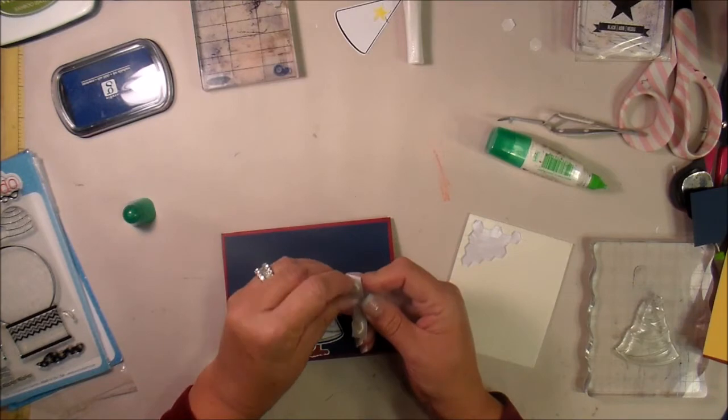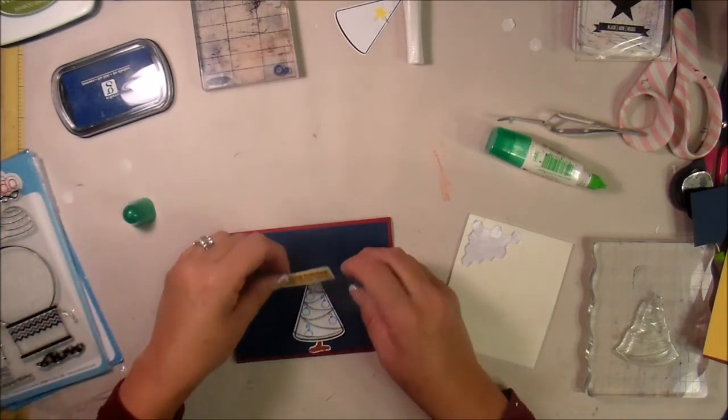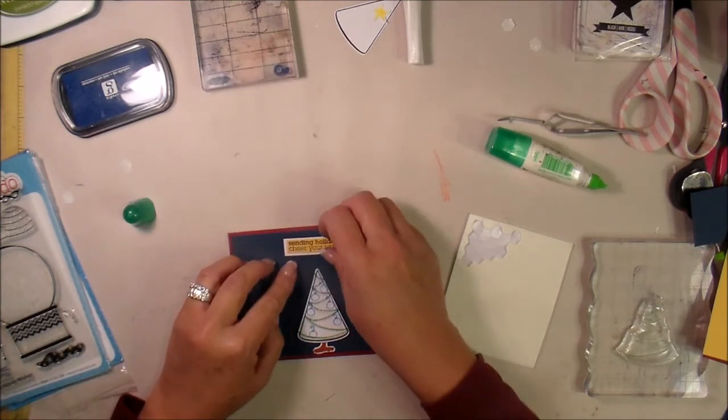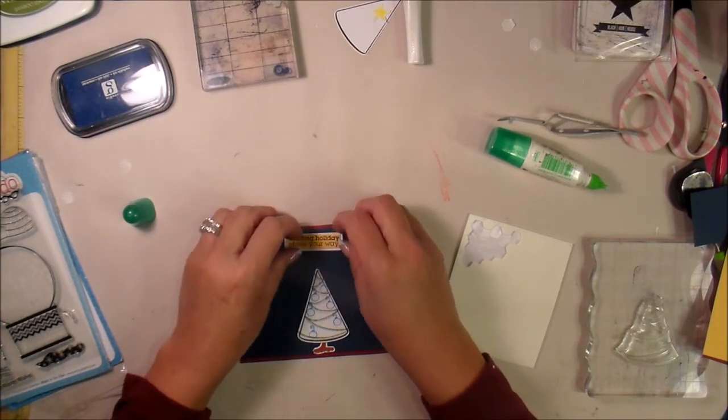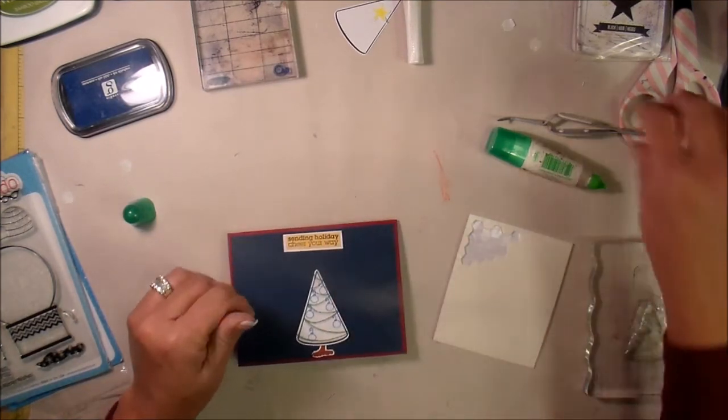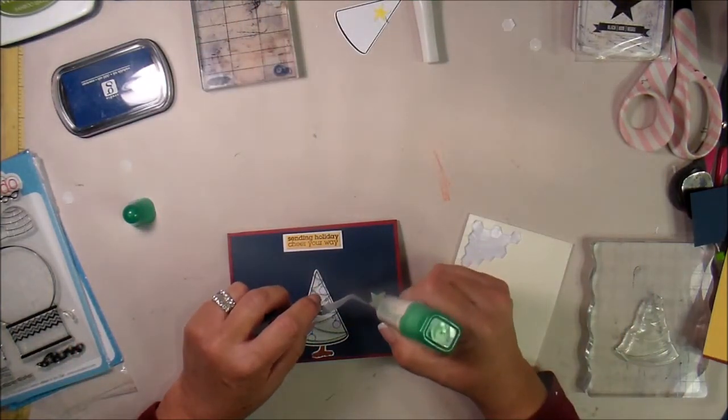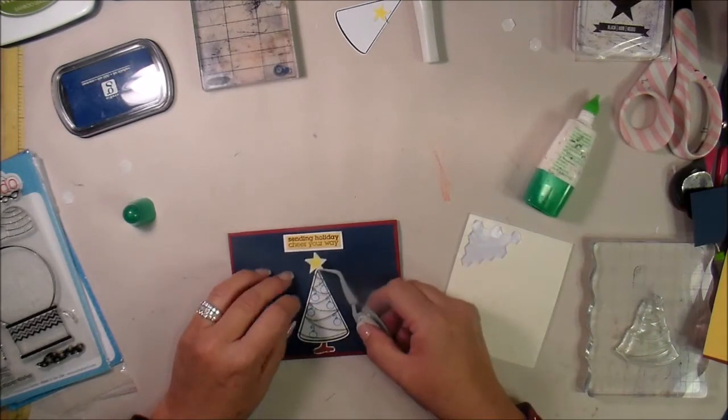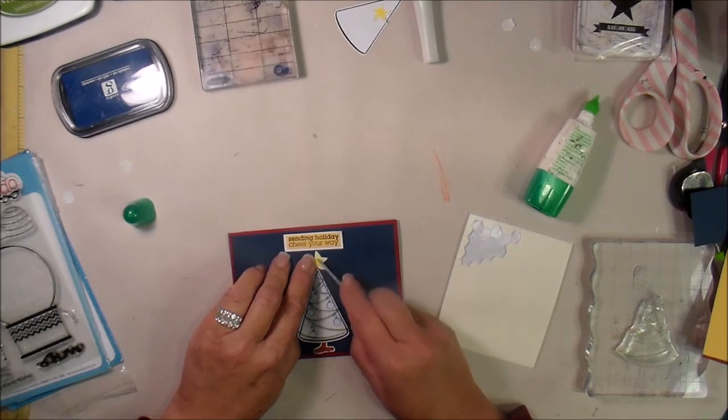I did a white back and a yellow front just to give it a little bit more color to it. Try to get that positioned. I'm going to put that up just a little bit more because I still have the star to put on. All right. Let's grab the star. I fussy cut the star as well. I'm saying that now just because I had mentioned that I got the Brother Scan and Cut.